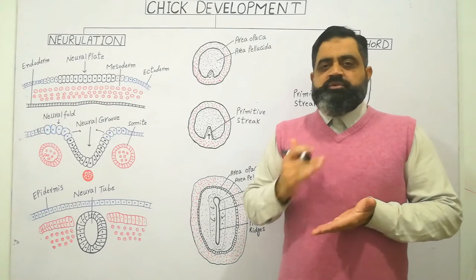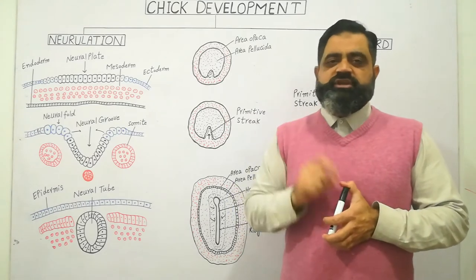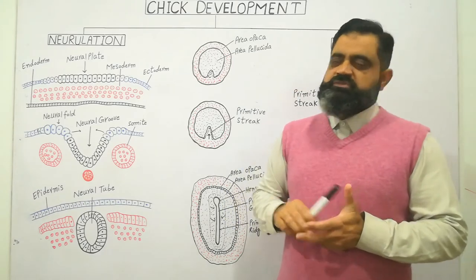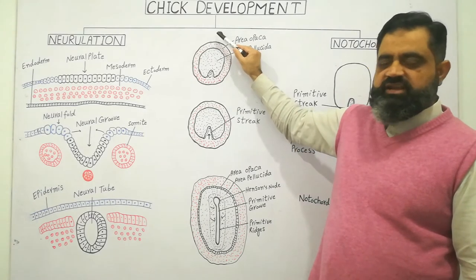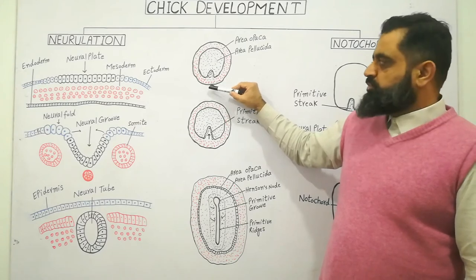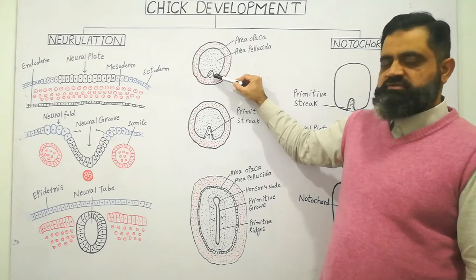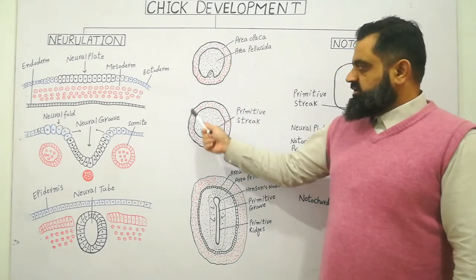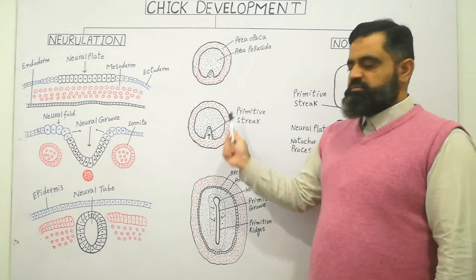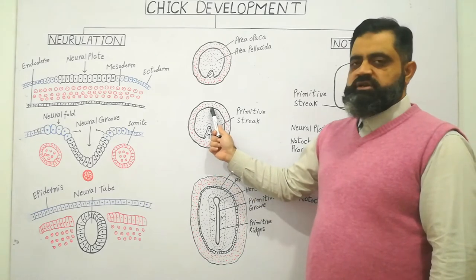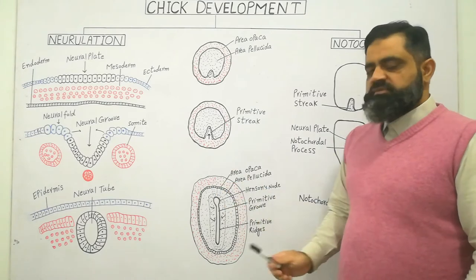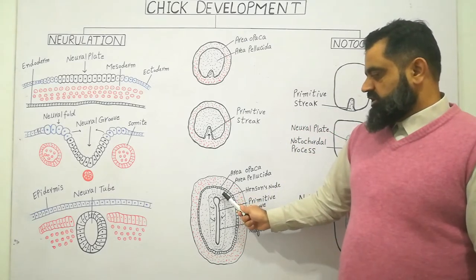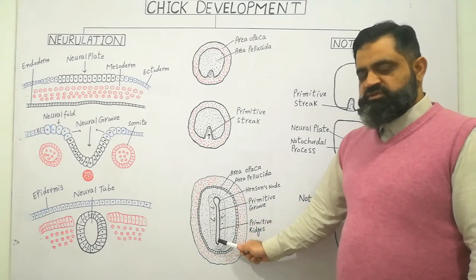As development proceeds, there is a formation of a streak which is a kind of invagination on the posterior side of the embryo. This is the anterior side of the embryo, also known as the cephalic end, and this is the caudal end, also known as the posterior end. In the posterior caudal end there is a formation of a streak known as the primitive streak, which starts from the posterior end and moves towards the anterior end. In the next diagram, the embryo shape has changed from round to pear-shaped. You can see area opaca, area pellucida, and in the center the primitive streak, which has been completed.